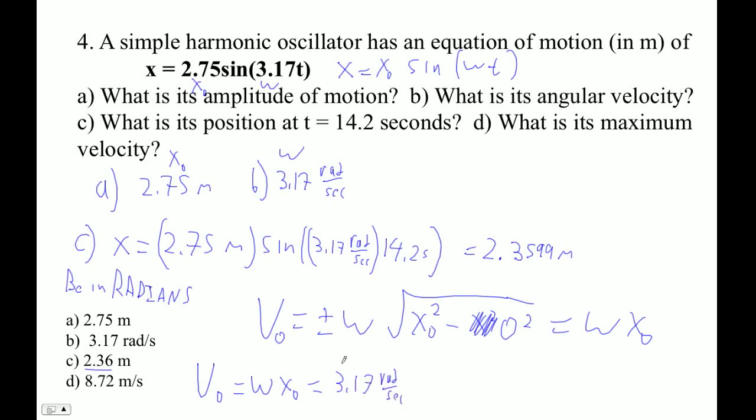radians per second, and x naught is 2.75 meters. So 3.17 times 2.75, and I get 8.7175.